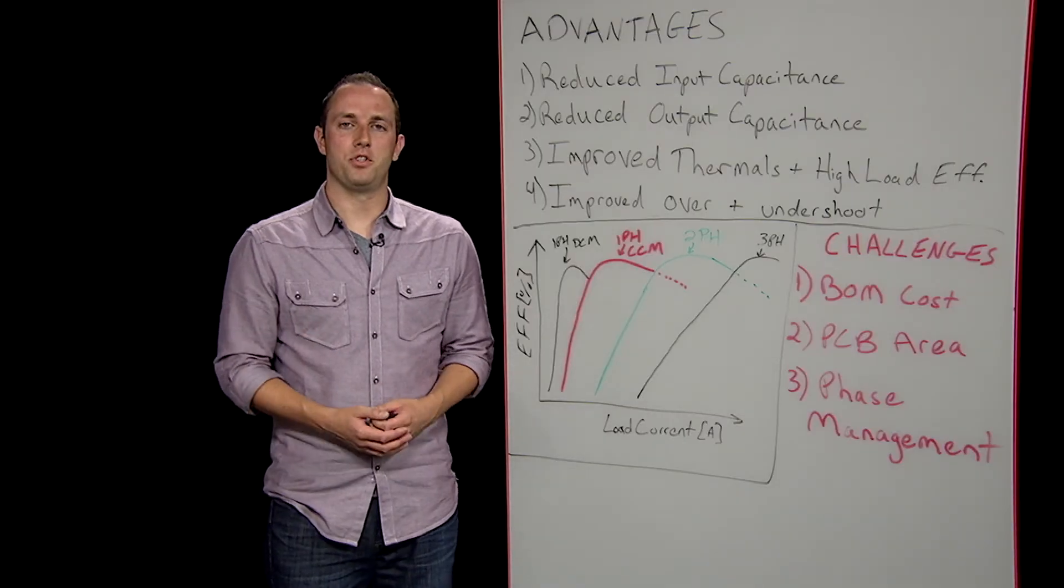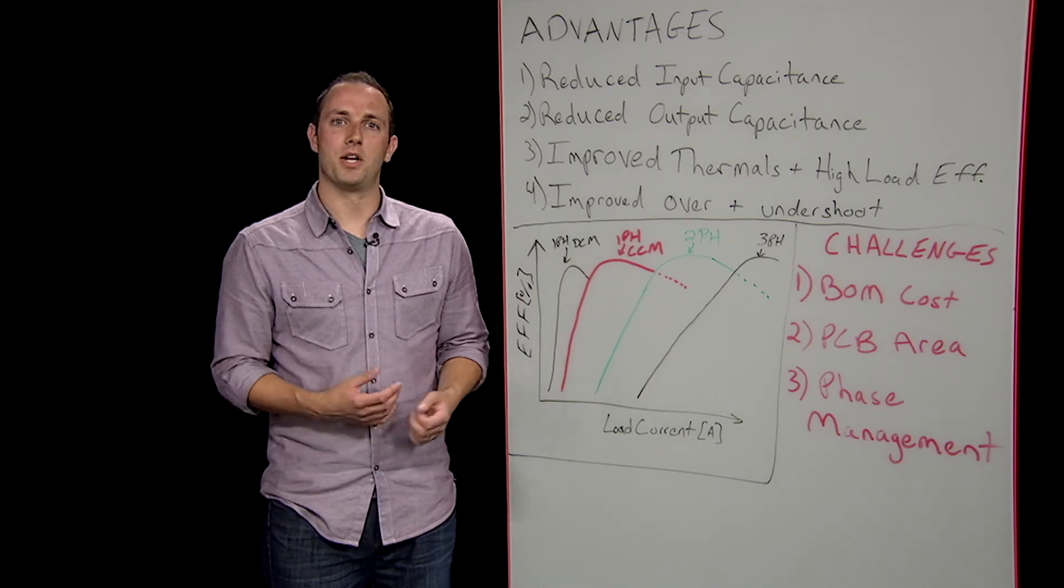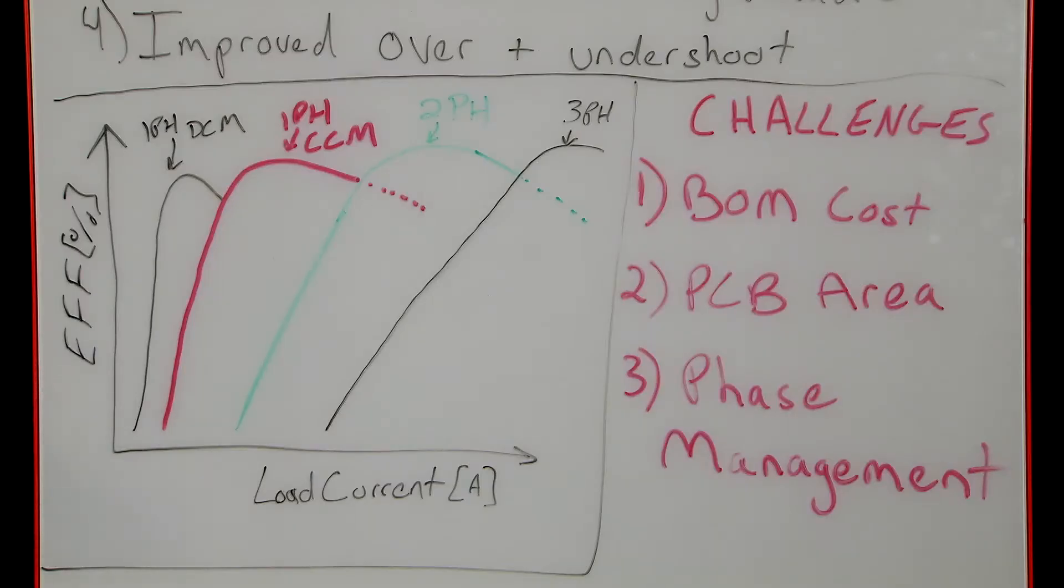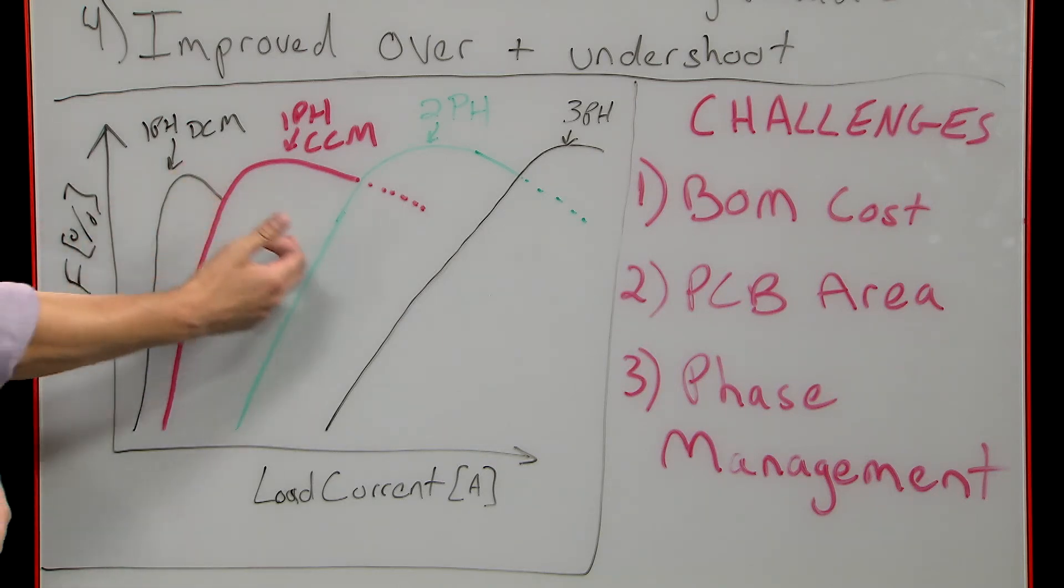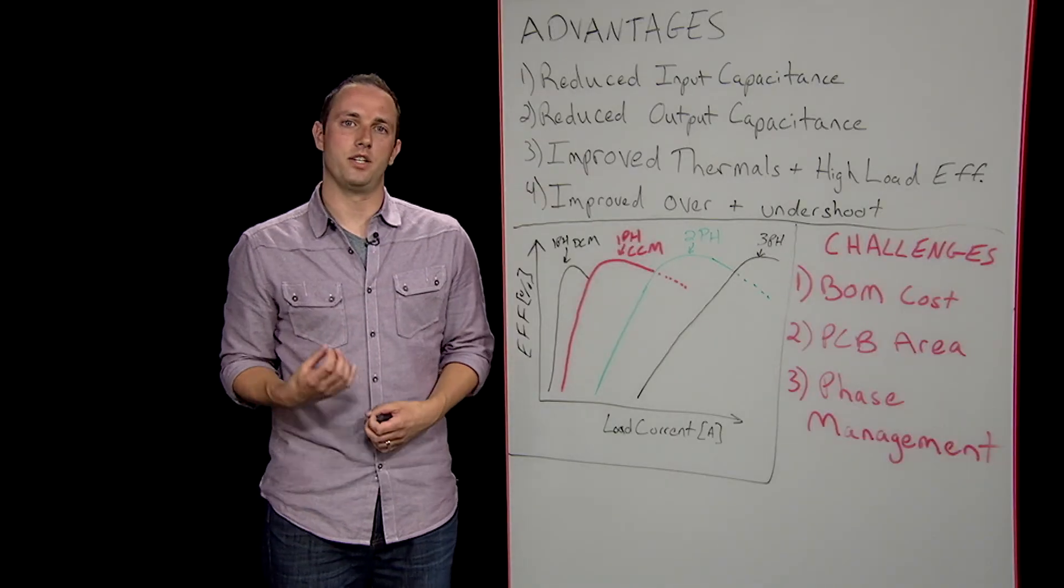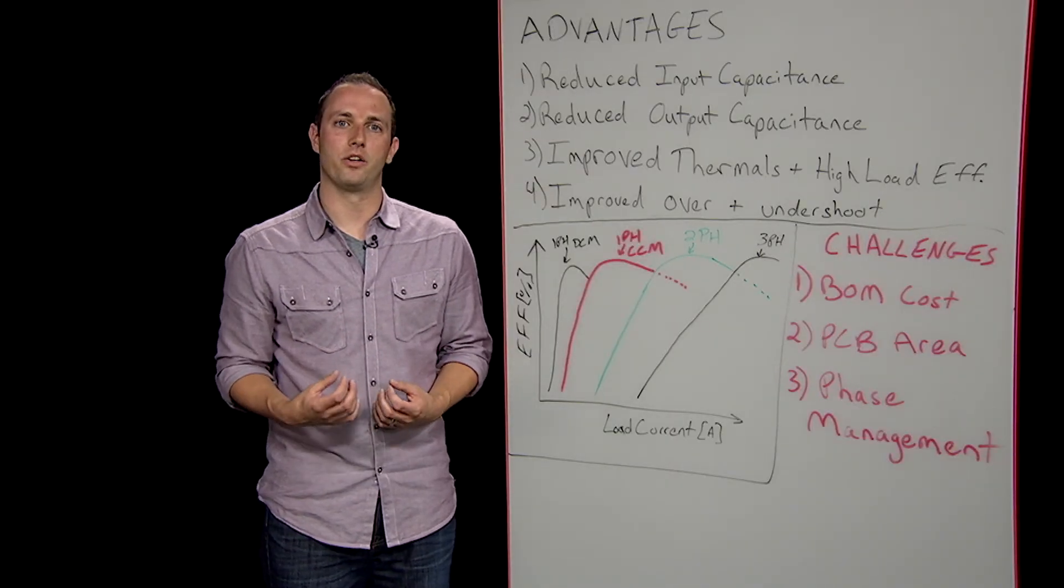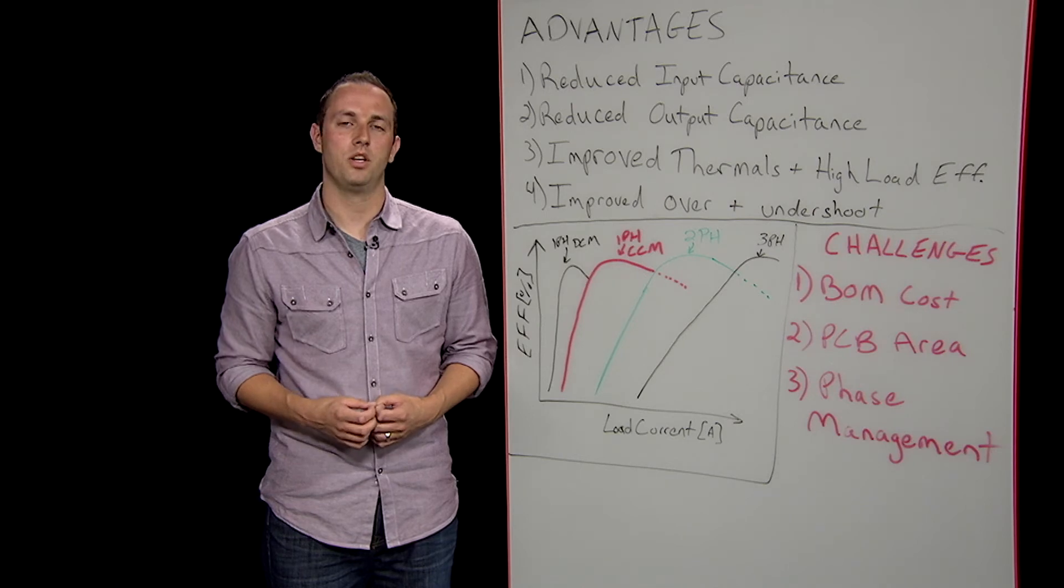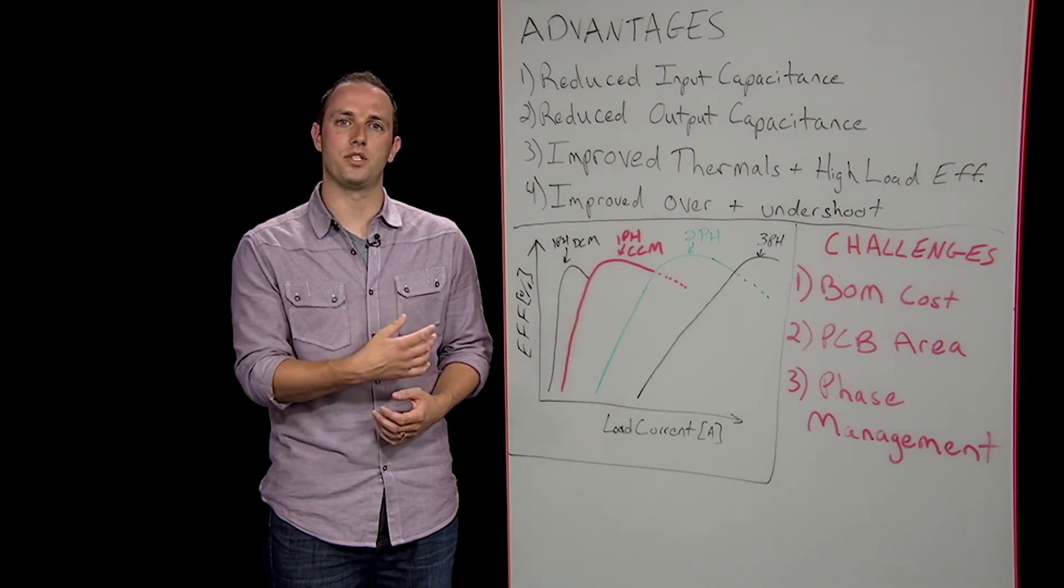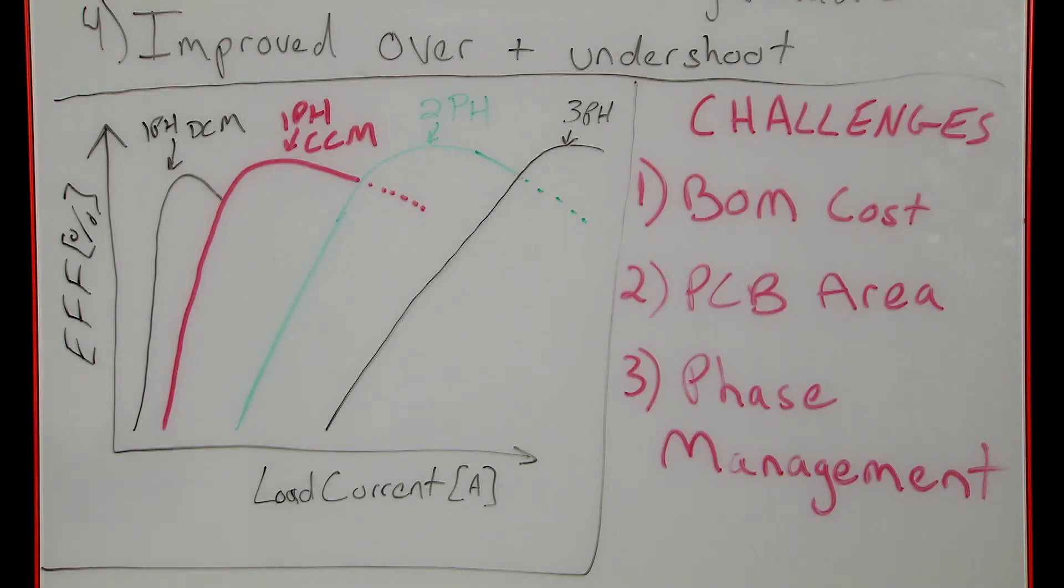Looking at an example of efficiency versus load current, it's easy to see the multi-phase advantage. As we increase the amount of current the load pulls, at some point there comes a point when the losses in a single phase become too great and the efficiency starts to decrease. That's when the controller turns on an additional phase and the efficiency of the regulator can remain higher than it otherwise would. Likewise, as the load current decreases, the controller will turn off phases and even allow a single phase to enter discontinuous conduction mode to maintain optimal efficiency.